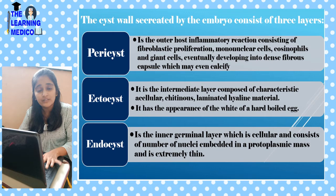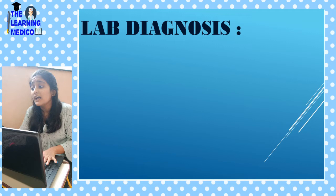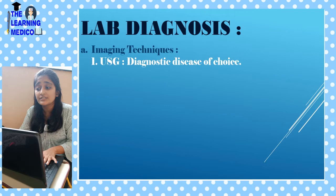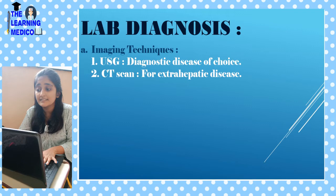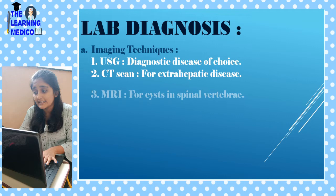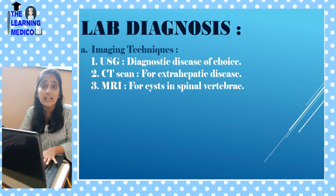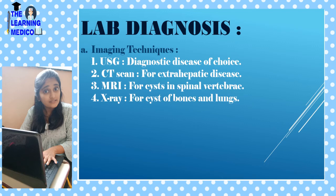Lab diagnosis — imaging techniques. USG is the diagnostic method of choice. CT scan is used for extra-hepatic diseases. MRI is used for cysts in the spinal vertebrae. X-ray is used for cysts in bones and lungs. IV pyelogram is used for renal disease.